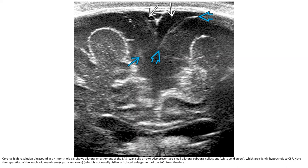This is a high-resolution ultrasound in a four-month-old. Bilateral enlargement of the subarachnoid space is present, with small bilateral subdural collections which are slightly hyperdense compared to CSF. Note the separation of the arachnoid membrane from the dura.